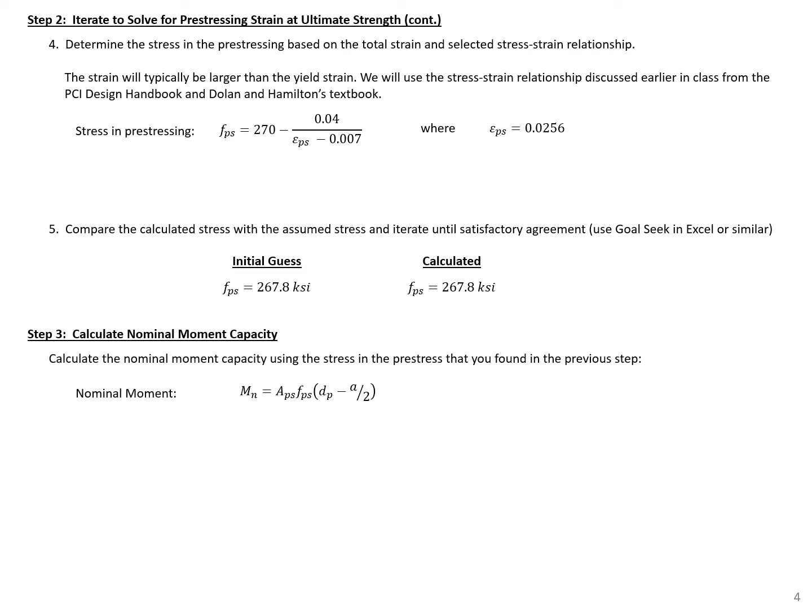We can now use that strain that we found with whatever stress-strain relationship we want to use. So we can use the Ramberg Osgood expression or the PCI design handbook approach expression. I'm going to use the equation that we find in the PCI design handbook and also recommended by Dolan Hamilton, which is shown here when we have a strain. So when our epsilon PS is greater than 0.0086, after we're yielded,